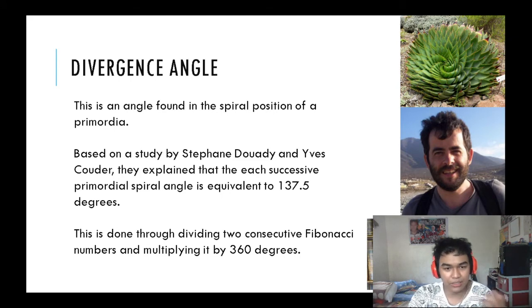Now let's talk about the golden number, or as I call it, the divergence angle. The divergence angle is a type of angle in which in a spiral position you can see a form of primordia. Primordia is basically like a spiral pattern which can be found in plants. This was made by Stéphane Douady and Yves Couder. They explained that the divergence angle or the perfect divergence angle for a primordia is 137.5 degrees.